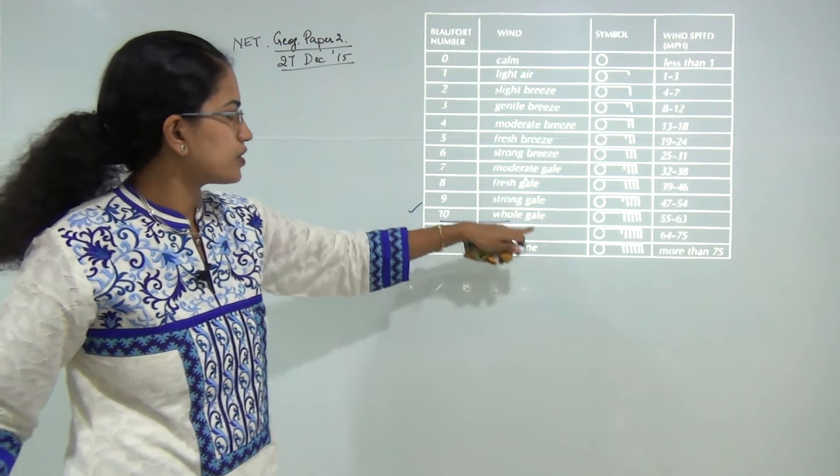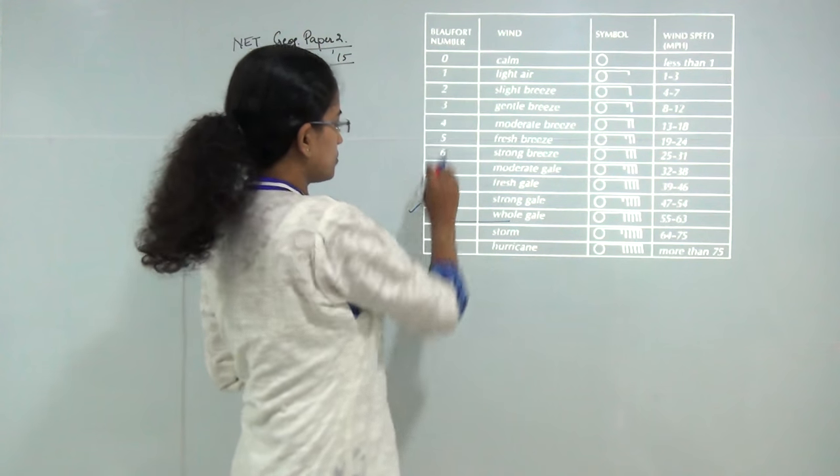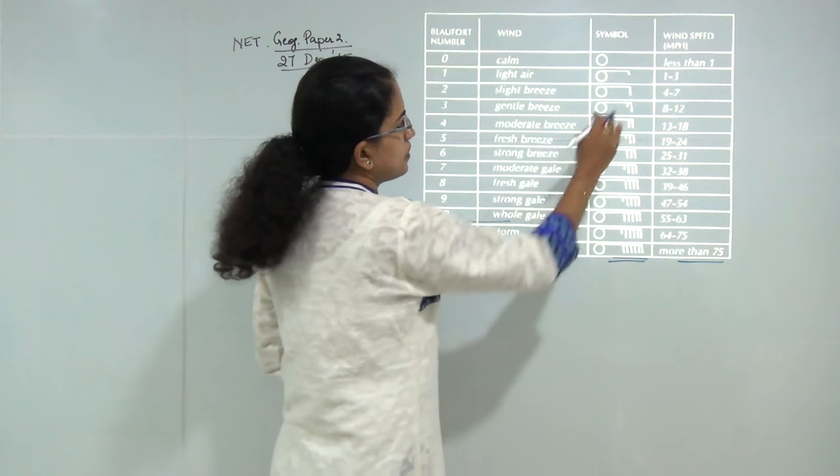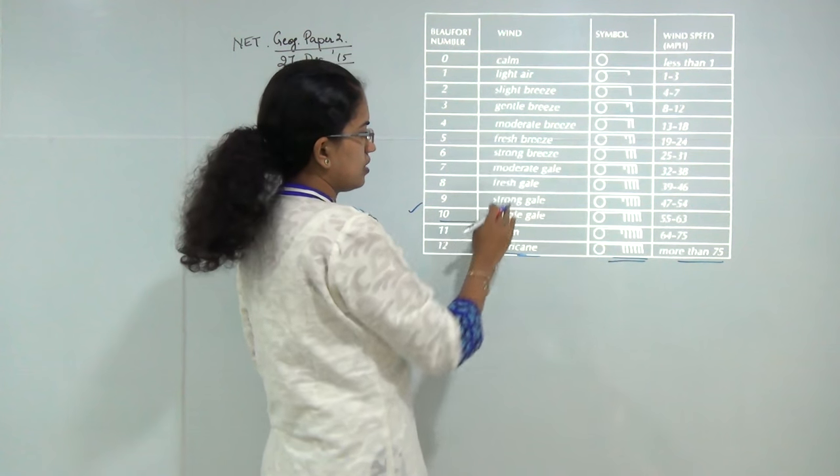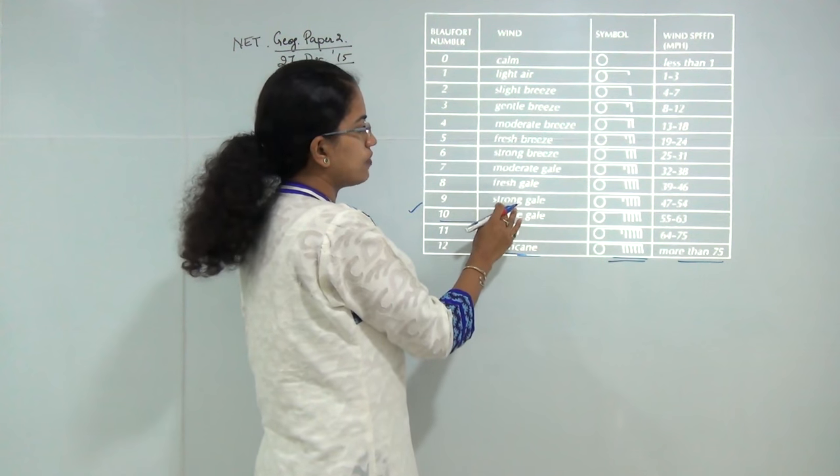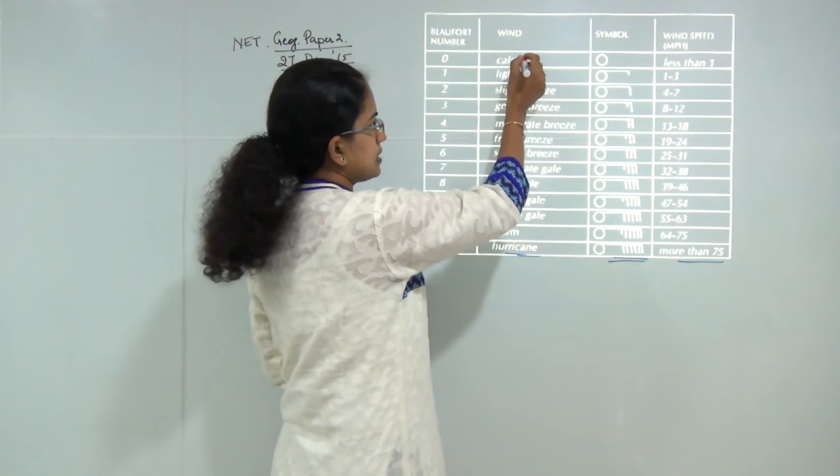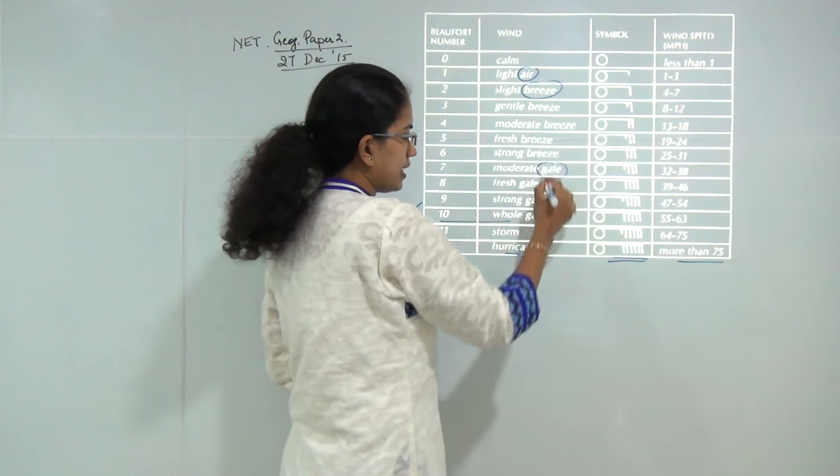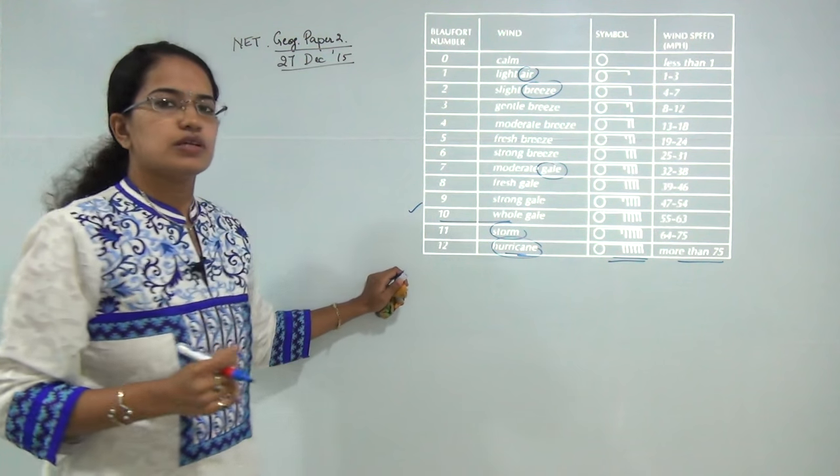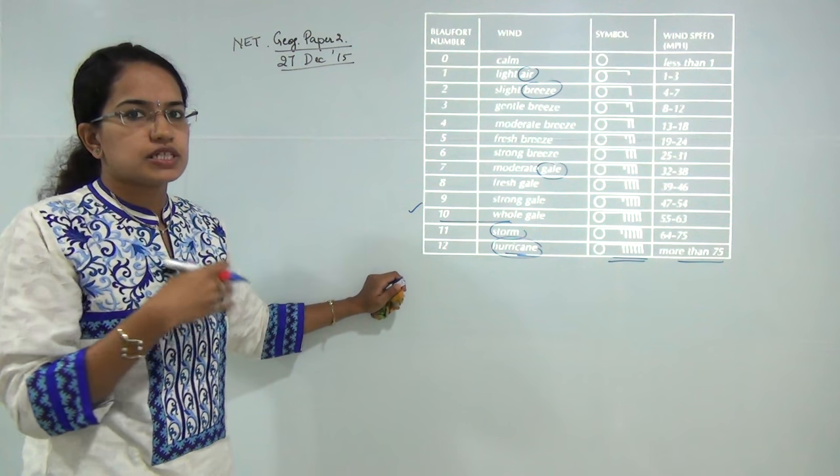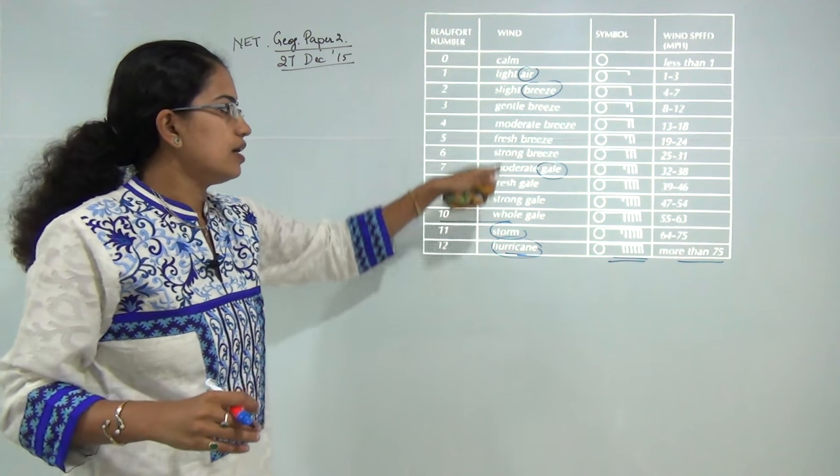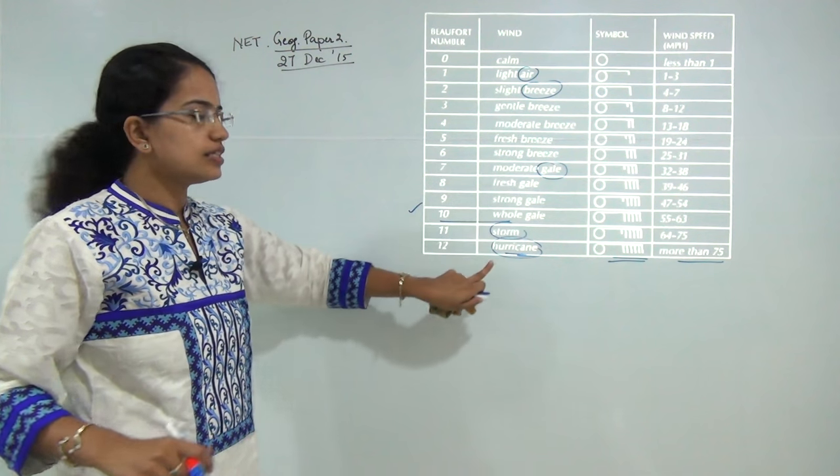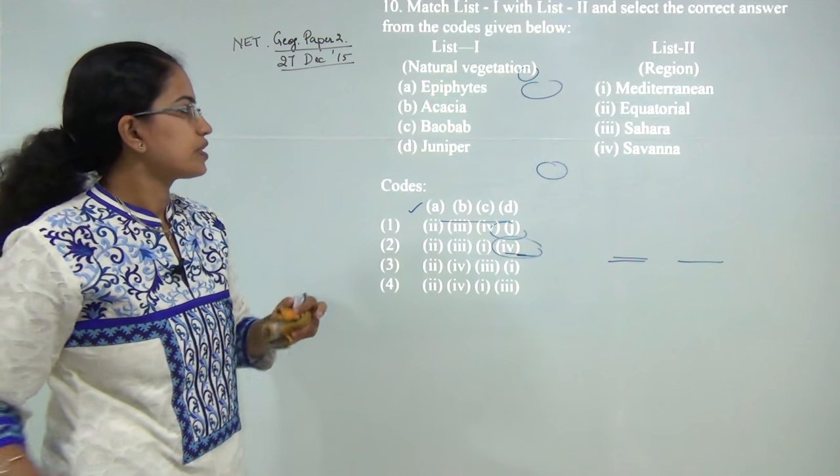For the Beaufort number you have 0 to 12 numbering and hurricanes are marked here. You have symbols for different types of winds: light air, then breeze, gale, and finally storm and hurricane. If this time there's a question on Beaufort scale, next time there can be a question based on intensity. You must know breeze, gale, storm, and hurricane.